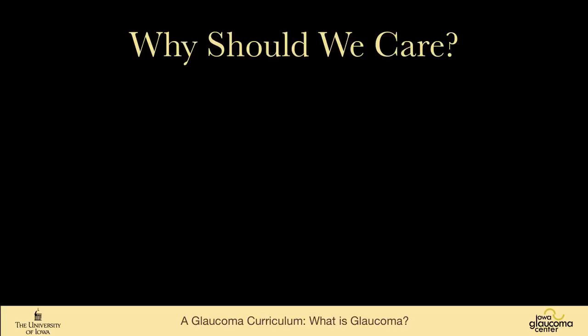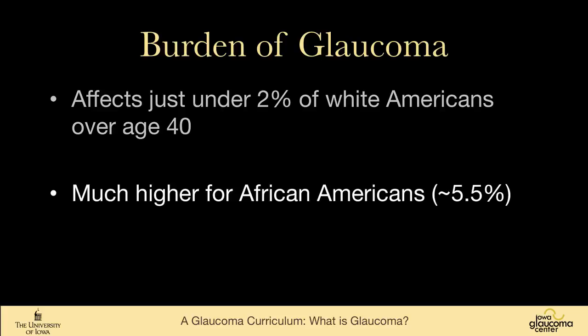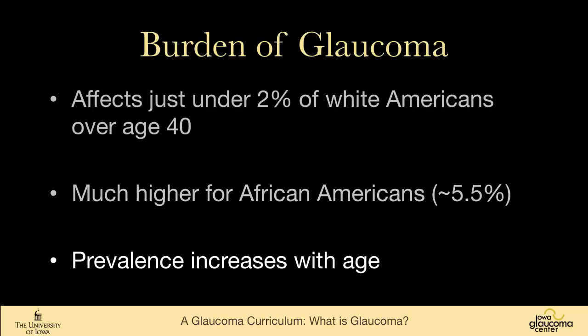We're going to go over all this material in greater detail in talks on visual field, optic nerve, and nerve fiber layer later on. Why do we care? Glaucoma affects just under 2% of white Americans over age 40, so it's quite common. It's much more common in African Americans, around 5.5%, where the disease is harder to treat and more aggressive. Prevalence increases with age, so in a retirement home, far more than 2% of patients will have glaucoma.